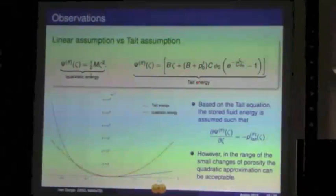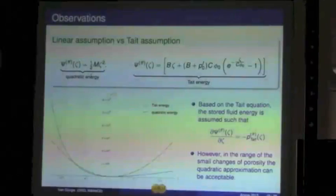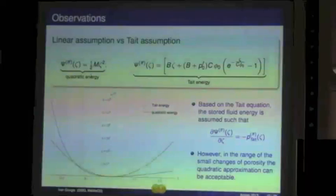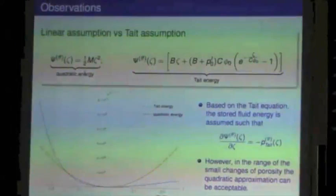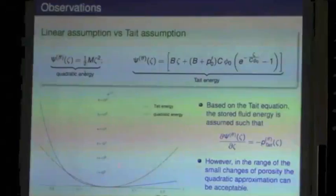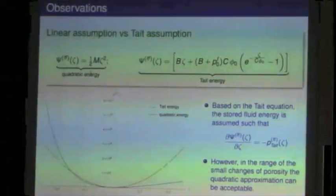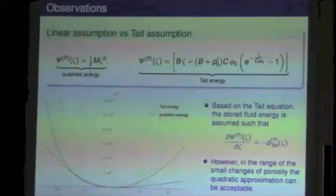With this assumption, we can write the term of energy in this form. Obviously the derivative of this part of energy with respect to zeta must be equal to the pressure, the Tait pressure we saw before. Here in this plot, I compare the quadratic energy and the Tait energy. You can see they are very different. But if we are in a situation where the change of porosity is very low, we can without loss of generality consider this simple model. Obviously if we have very high change of porosity, we can switch to this term and consider a more complicated energy.